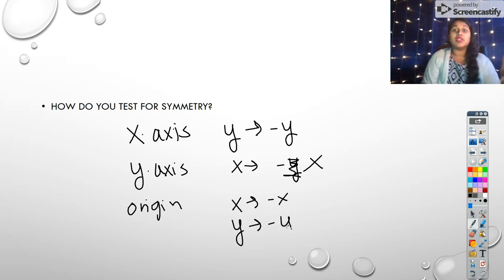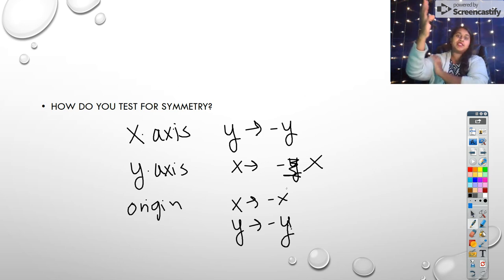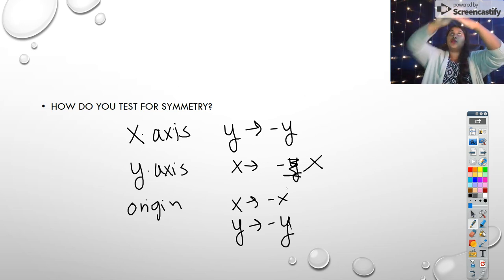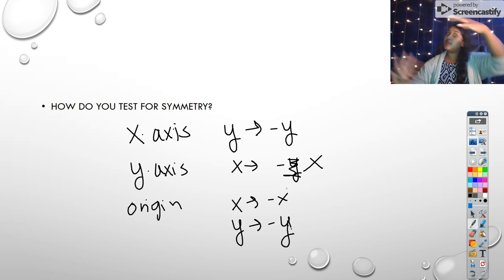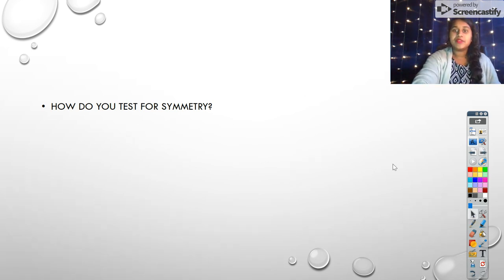Because you can think about what's happening with symmetry and why these are becoming negative. If you're testing the x-axis, well, then all of your y values up top have to become the same y values on bottom. They just have to be negative, reflective, or change that sign.